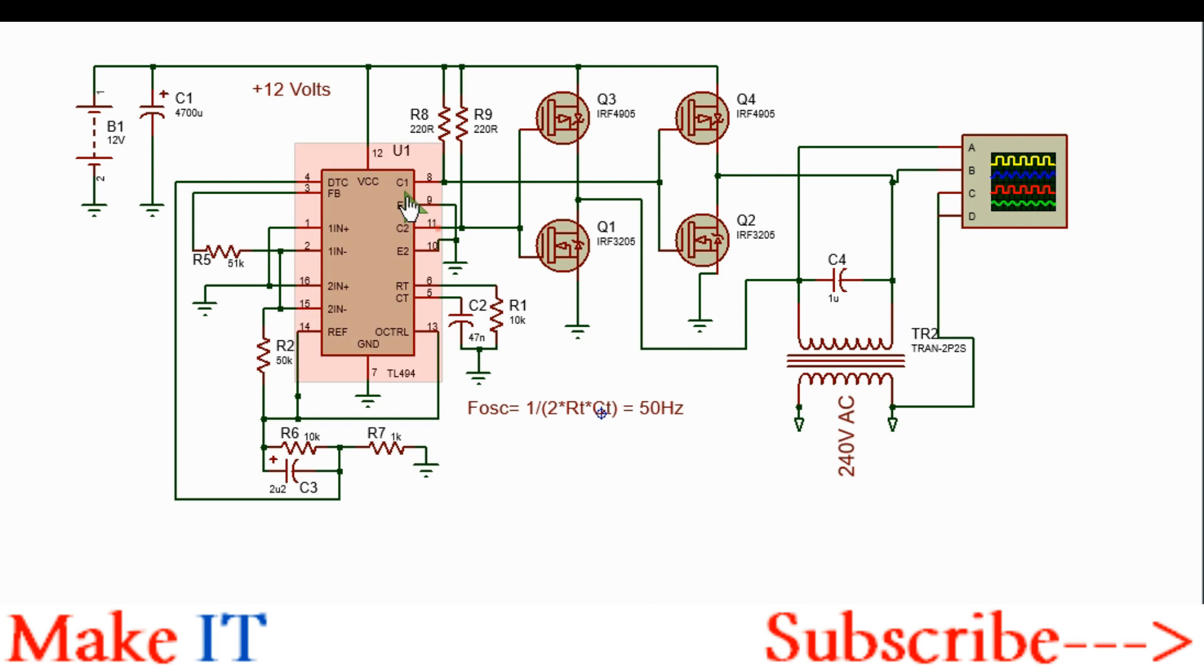The TL494 has two driver transistors. The open collectors are pulled up to 12 volts with 20 ohm resistors where the open emitters are grounded. The two BJTs are connected to operate in push-pull mode by the output control pin 13 which is pulled up to 5 volts.